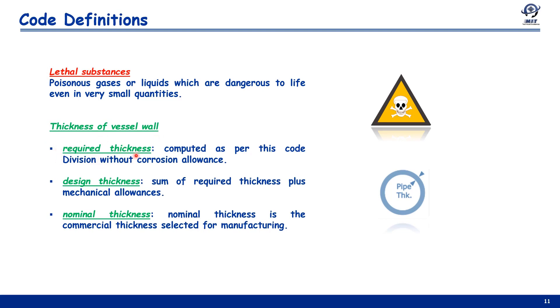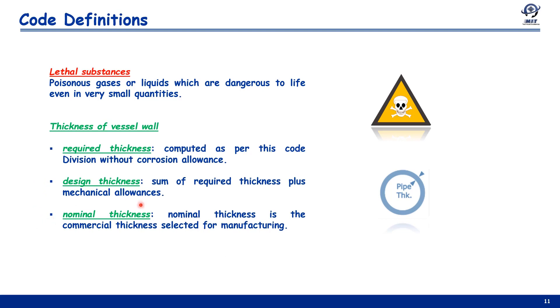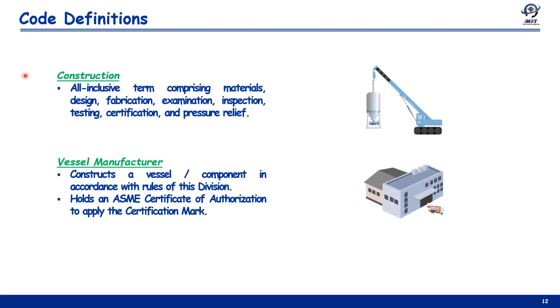Regarding vessel wall thickness, there are various types. First is the required thickness — this is the thickness computed per code division calculation formulas, without corrosion allowance. Design thickness is obtained by adding required thickness plus allowances, which can include corrosion allowance, machining allowance, or erosion allowance. Finally, nominal thickness is the commercial thickness selected for manufacturing.